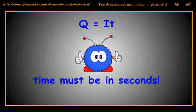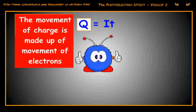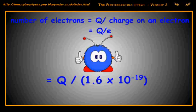We can then change that total charge into the number of electrons that moved to make it up. We therefore have to divide that charge in coulombs by the charge in coulombs on each electron, which is 1.6 times 10 to the minus 19.